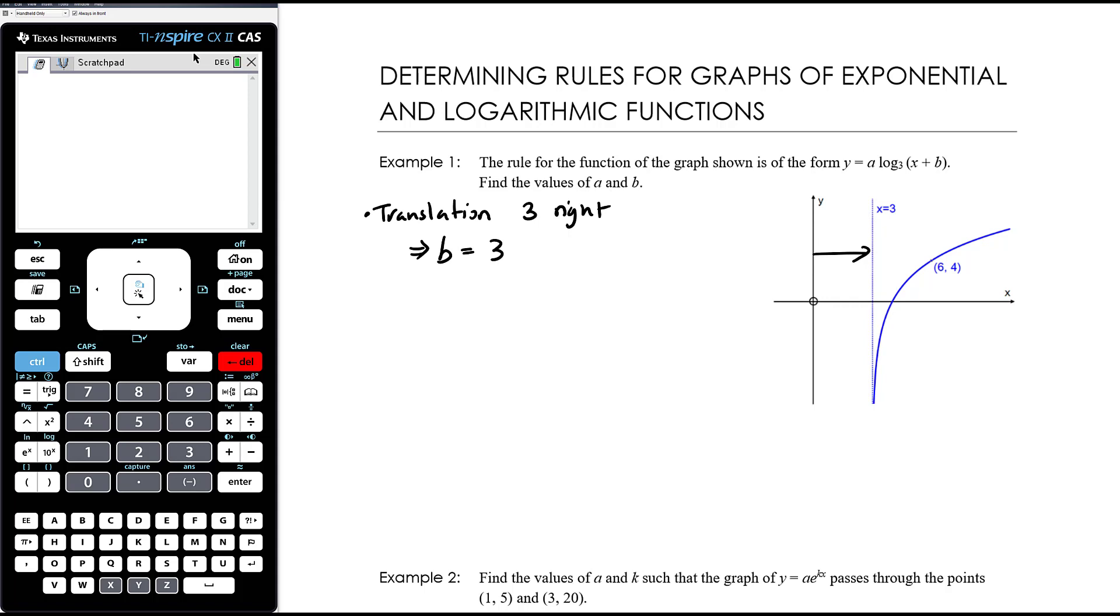We want x plus 3, the graph, no sorry, b has to be negative 3. X plus negative 3, so that is x minus 3. OK, so that's b. So make sure we answer the question. The question isn't to find the rule, the question is to find the values of a and b. So we've got b.